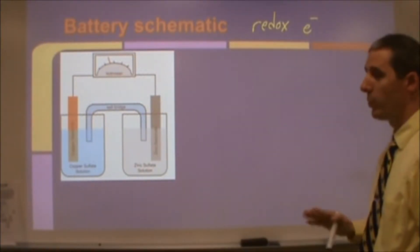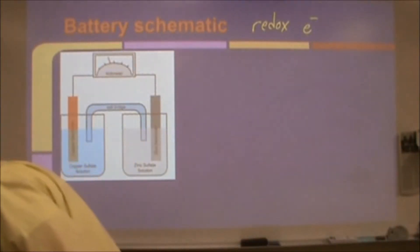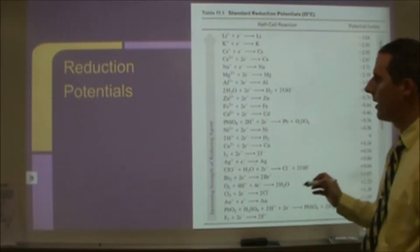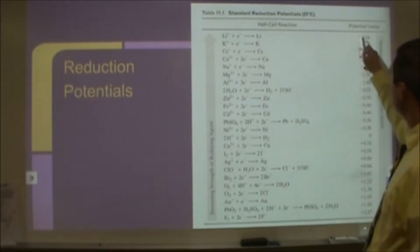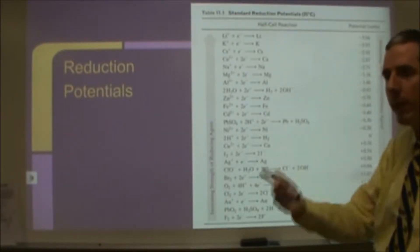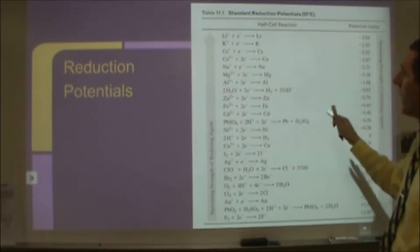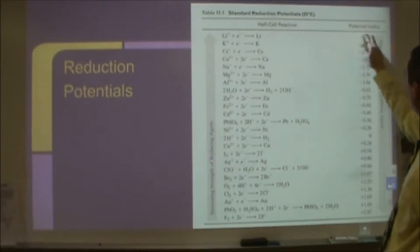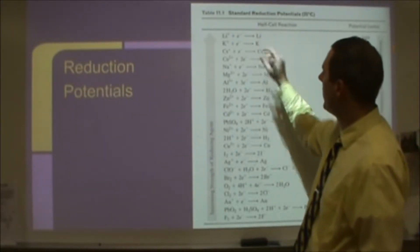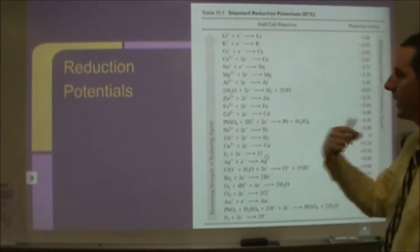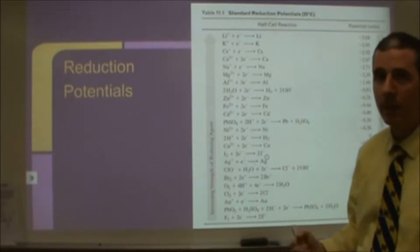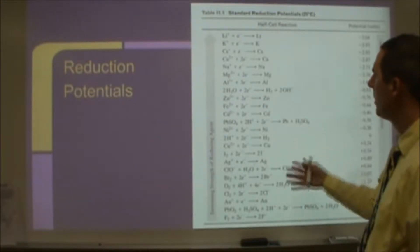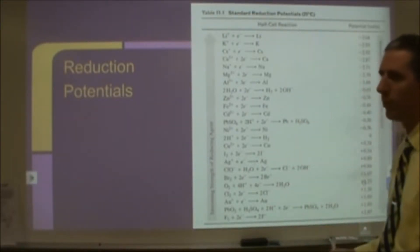When going through batteries, you want to start with reduction potentials, which come off of a list like this. This is your starting point for analyzing a battery — what chemicals am I using? This list shows how good things are at pulling or giving up an electron. Things with really negative voltages are very good at giving up electrons, and things with very positive voltages are very good at taking electrons. This has been determined for you through this list based on proton count, electron repulsion, shielding, and so on.